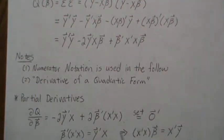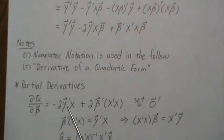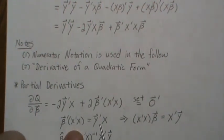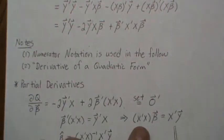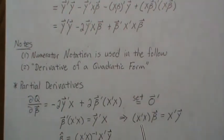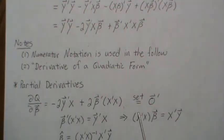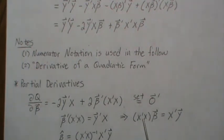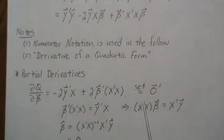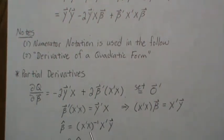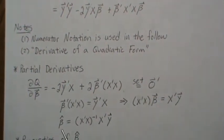Now we set it to zero and solve for beta. We divide by 2 everywhere, move terms to the other side, and take the transpose of both sides to get this. Now since X was full column rank, this k plus 1 by k plus 1 matrix is non-singular, so we can take its inverse. We pre-multiply by X transpose X inverse and that cancels, leaving us with the least squares estimate for beta.